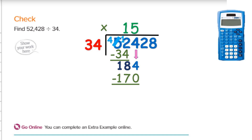Then I subtract. I can take 0 from 4 — it's just 4. When I take 7 from 8, I get 1, so I have 14 left over. I know I've done it right because when I look at my remainder — in this case, 14 — I simply ask: will 34 go into 14? That's just a quick mental check. The answer is no, so I know I'm on track. If I end up with something bigger than 34, then I should say I didn't go in enough.